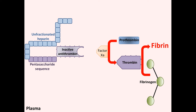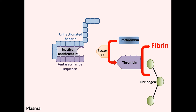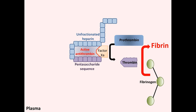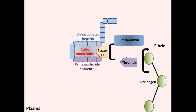Within the blood plasma, heparin by itself does not have any anticoagulant activity. Unfractionated heparin binds to the inactive antithrombin, and this binding activates it through a conformational change. This then allows the active antithrombin to bind and interact with factor Xa, stopping the conversion of prothrombin to thrombin, thereby inhibiting the production of fibrin from fibrinogen, and preventing the formation of any further clots.